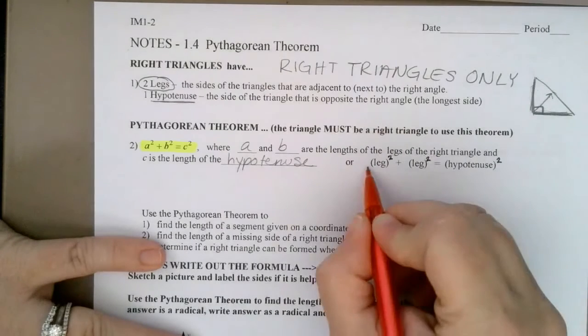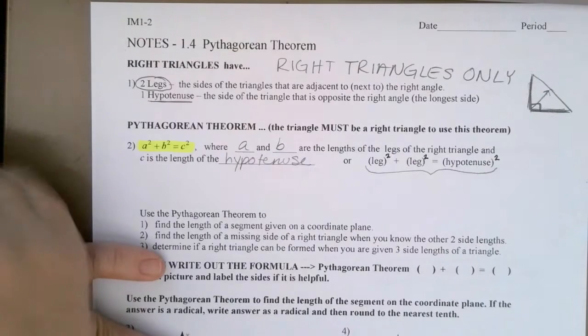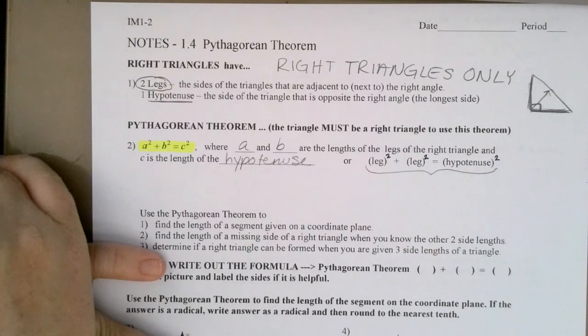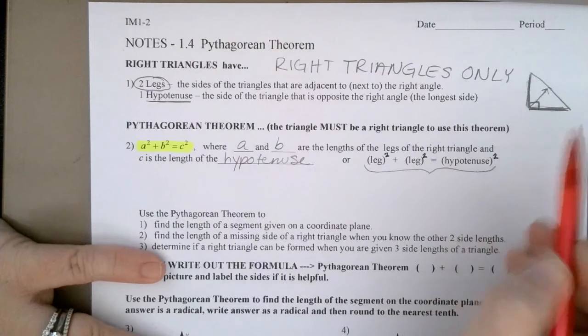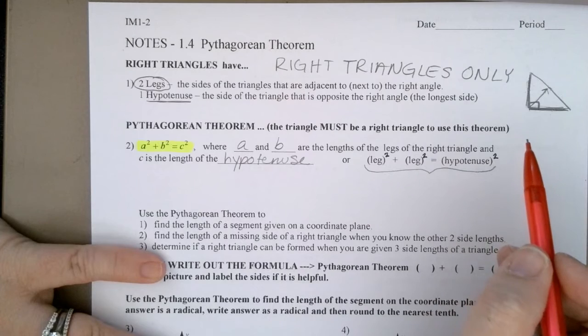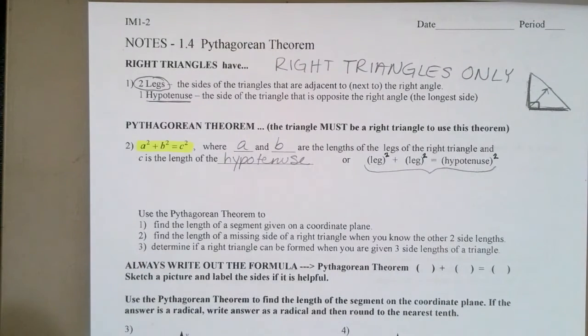Some people memorize the formula as leg squared plus leg squared equals hypotenuse squared. It's the same idea. As long as A and B are the two legs and not the hypotenuse, it doesn't matter which one you call A and which one you call B.